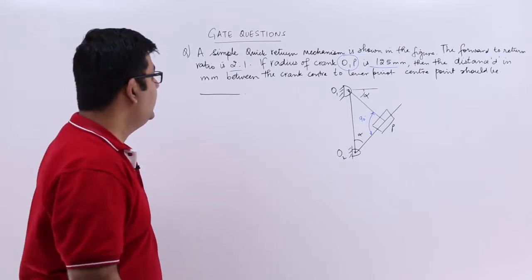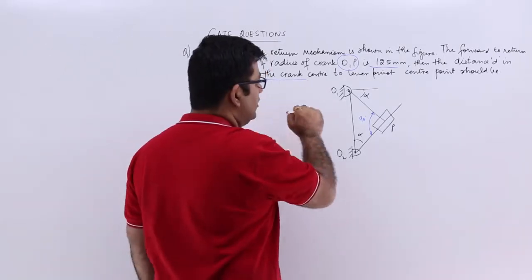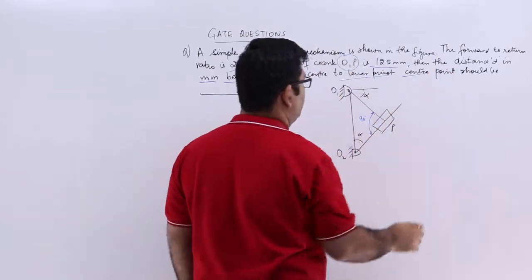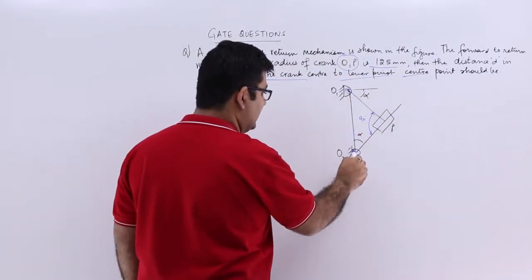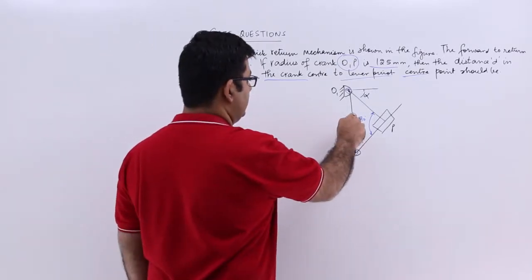So this is the crank center and this is the lever pivot center point. So we need to find out this distance d.